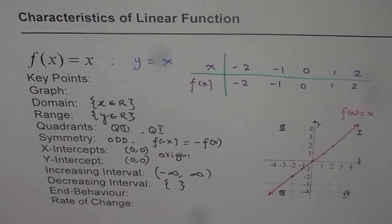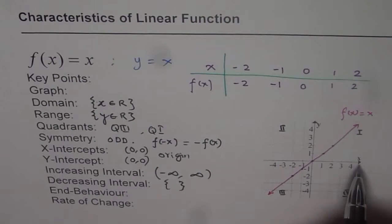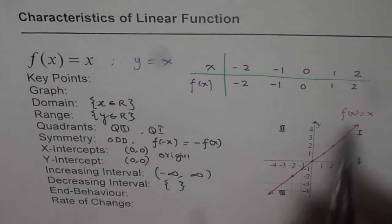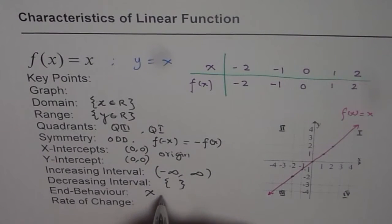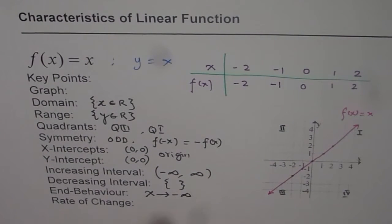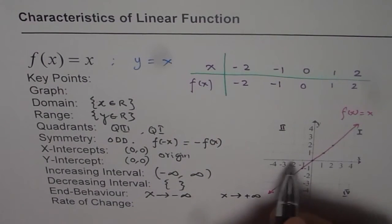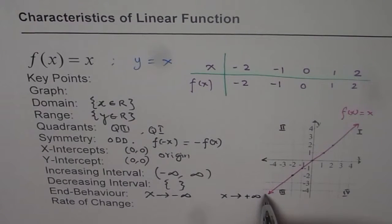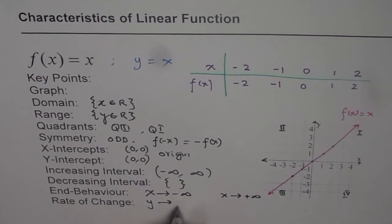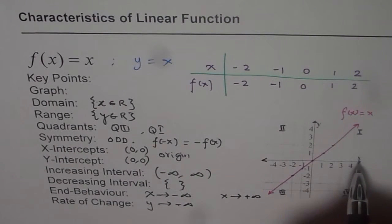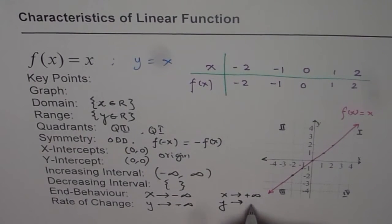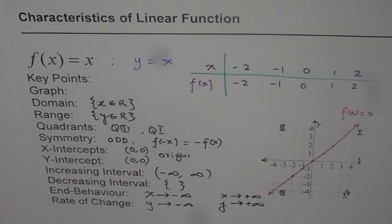End behavior is the next term to explore. It means what happens to the function when the x value increases without bound. When x goes to minus infinity or to plus infinity, what happens to f of x? As you can see, when x approaches minus infinity, the y value also approaches minus infinity. And when x approaches positive infinity, the y value also approaches positive infinity. That is the end behavior — the line moves from minus infinity to plus infinity.